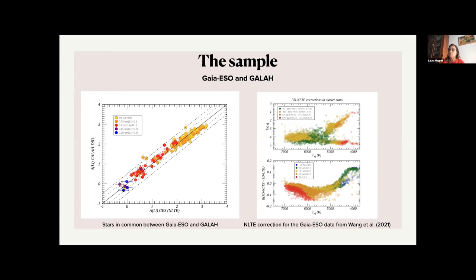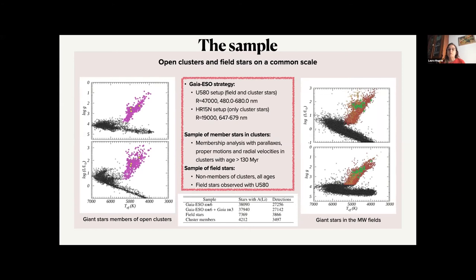And which is our sample? So we aim at studying the evolution of post-main sequence stars, so putting together stars from the main sequence turnoff to the tip of red giant branch and to the red clump. So we have selected both field and open cluster stars.